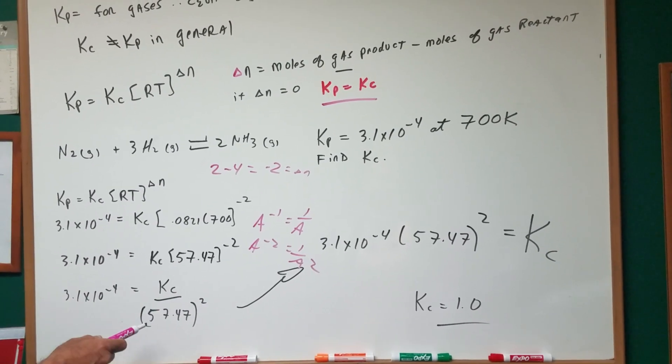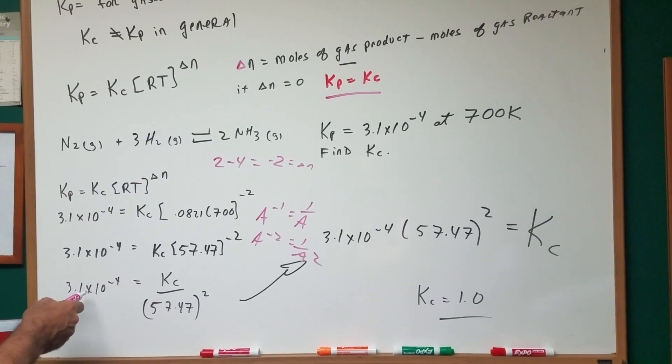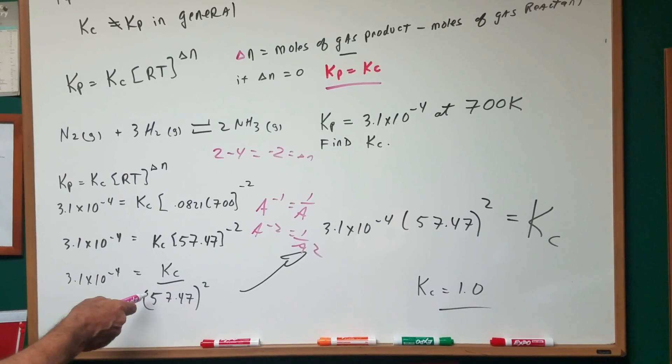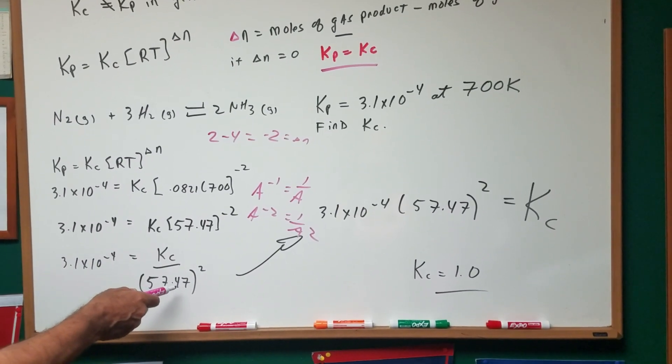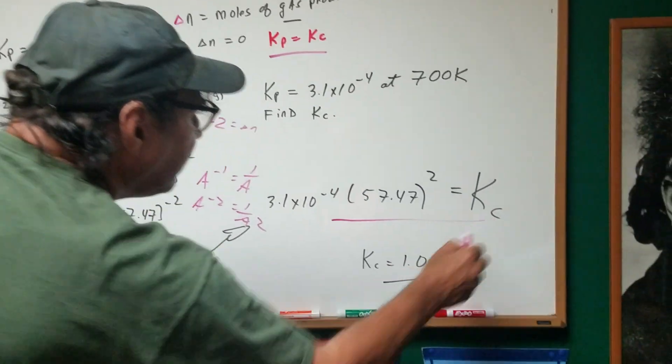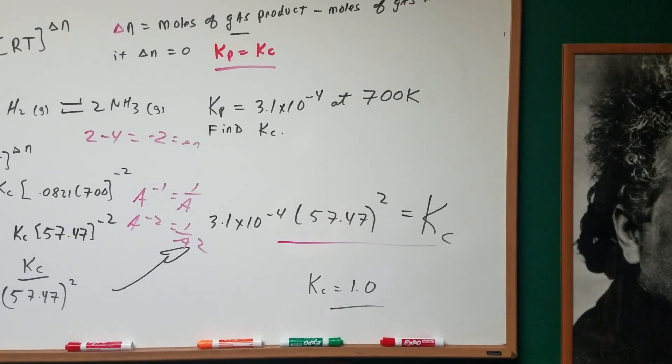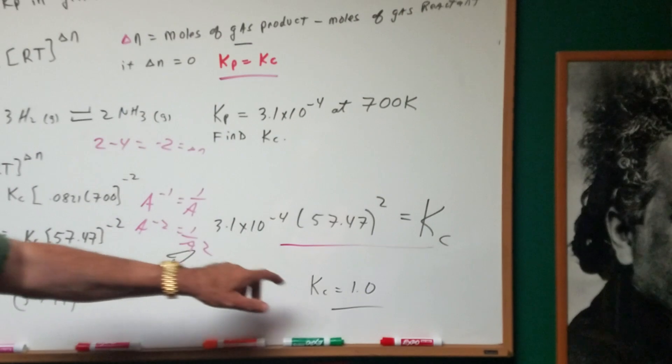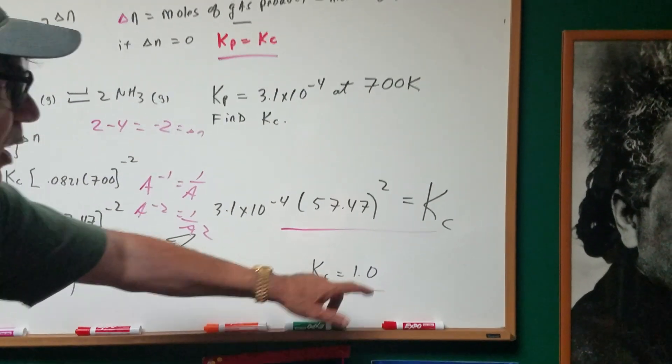So rearranging this, you should be able to at least set it up for the DAT or the OAT. You're going to multiply 3.1 times 10 to the minus four times 57.47 squared. And we set it up, and we'll leave it in the form of this. For those that are curious, when I worked it out, the KC is 1.0.